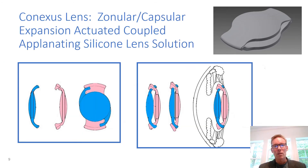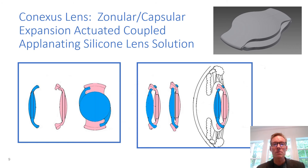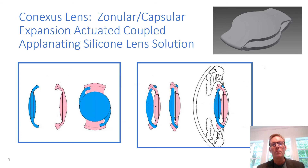The coupled lens design is deceivingly simple in that it is just two mechanically coupled IOLs made from presently utilized materials. Each lens is inserted separately through a 3 mm incision and coupled inside the lens, minimizing changes in surgical technique.